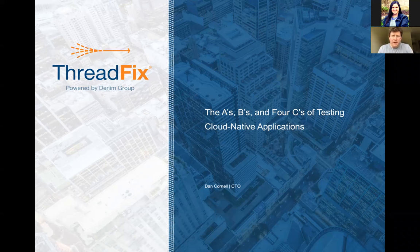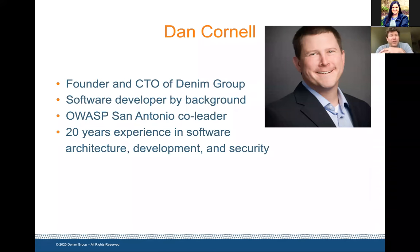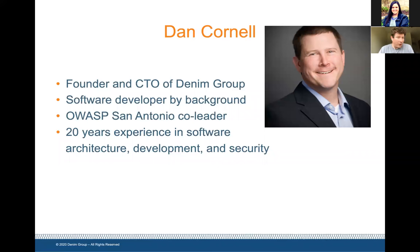That's a little bit about me — that is a picture of me with a pre-pandemic haircut. I wasn't wearing pants in that situation, but I am wearing pants today. I'm the founder and CTO of Denim Group, and I'm a software developer by background. A lot of Java, early server-side Java in the mid to late 90s, and some .NET work in the early 2000s. For probably the past 15 years, my focus has been helping organizations deal with the risk associated with the software that they are developing.